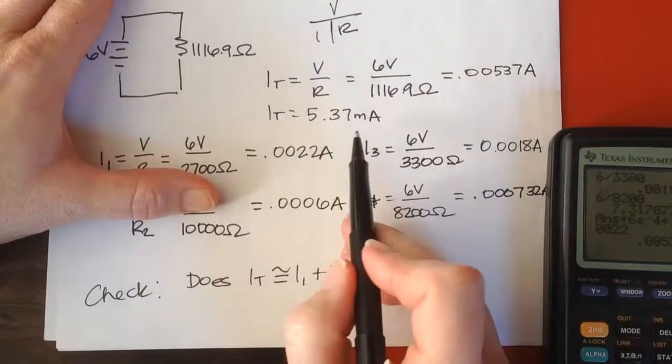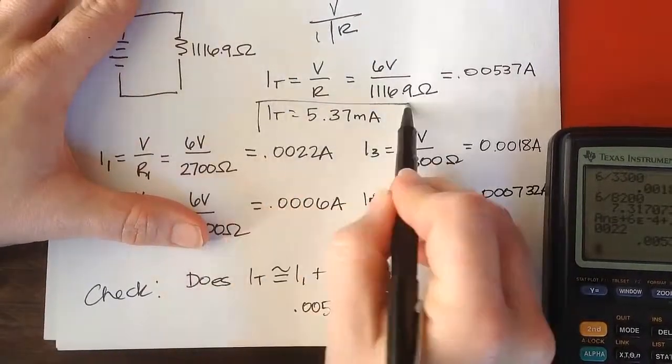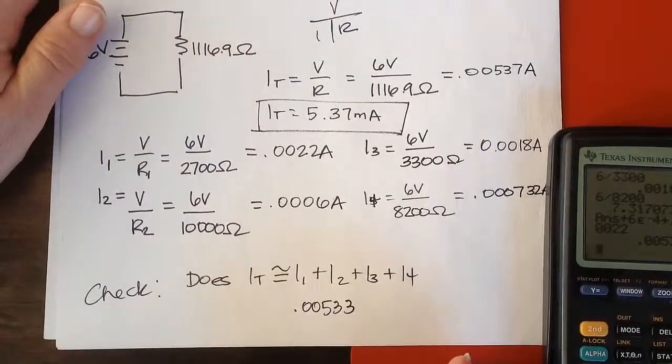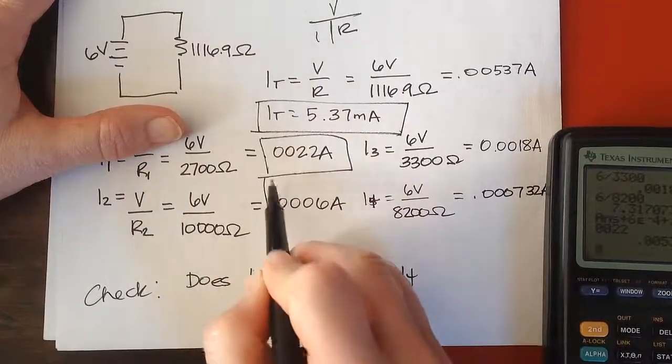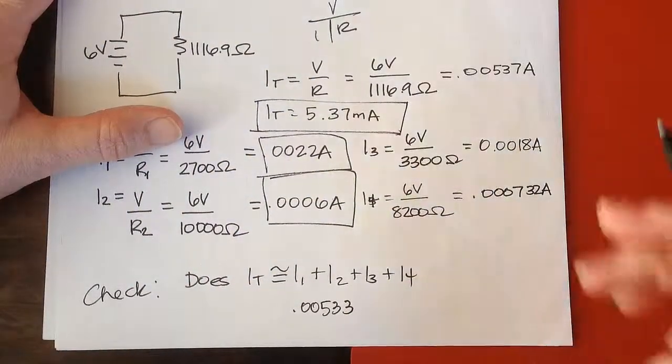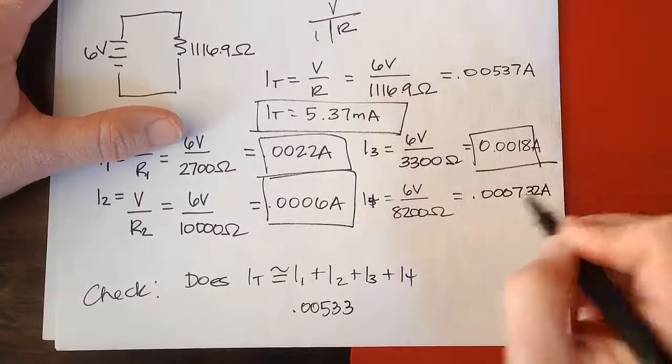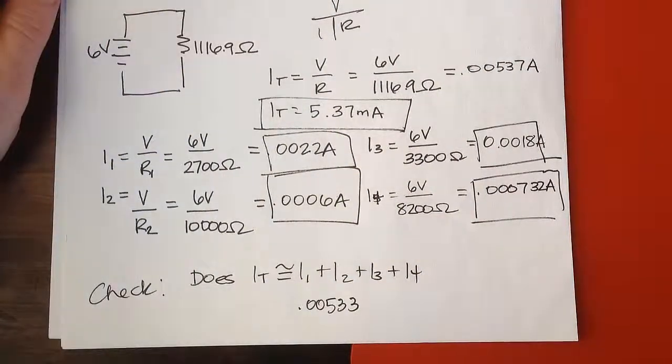And I had gotten originally for IT 5.37 milliamps, so that's pretty close. It's a rounding error, and now you can see I know the current in each branch. So I hope this helps. Have a good one.